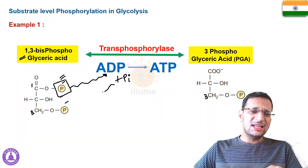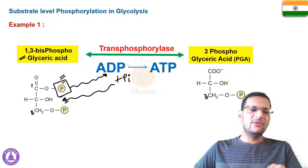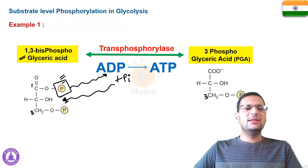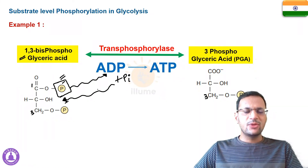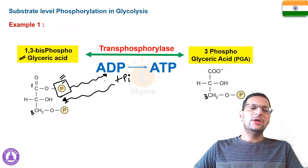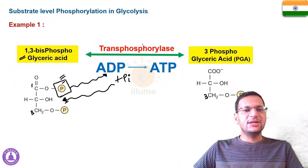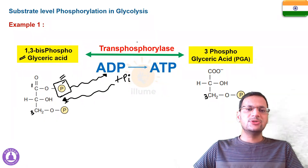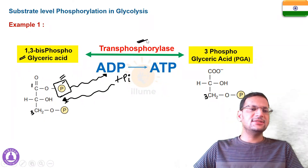This released phosphate gets attached to ADP to form ATP. The inorganic phosphate that converted ADP into ATP was derived from the substrate itself — making this a substrate level phosphorylation. The enzyme that catalyzes this reaction is transphosphorylase.